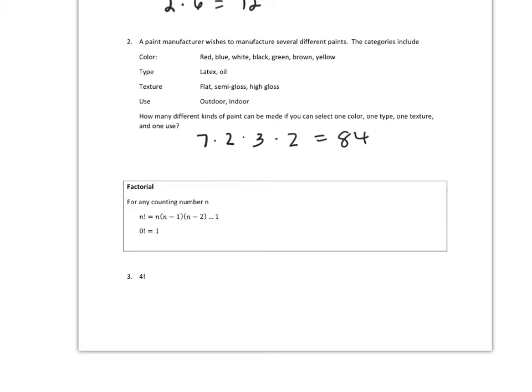So to define factorial, n factorial is n times n minus one. Keep on subtracting one until you get down to one. So four factorial would be you start at four, decrease by one, decrease by one, decrease by one, and multiply those together and you get twenty-four.